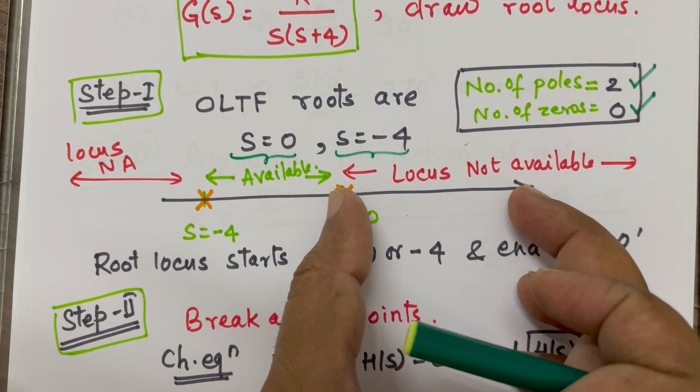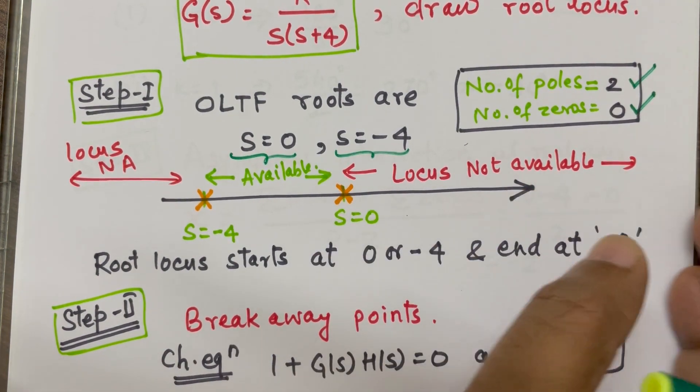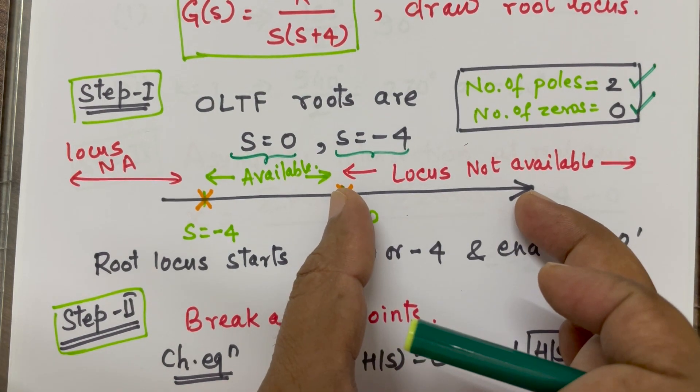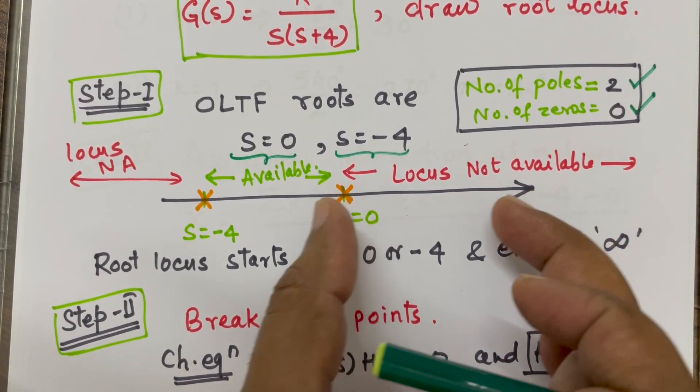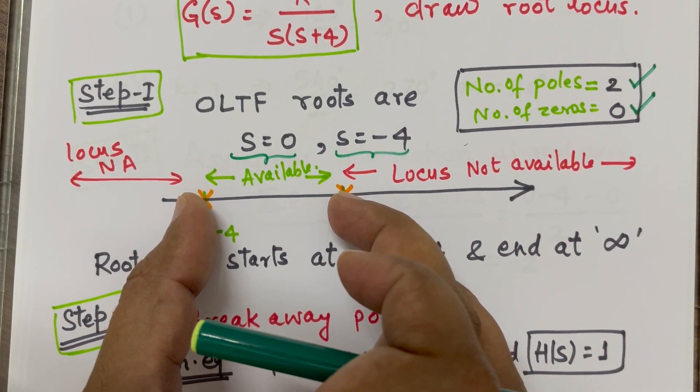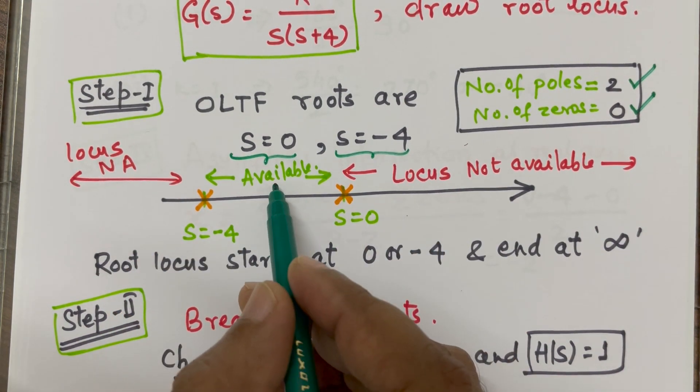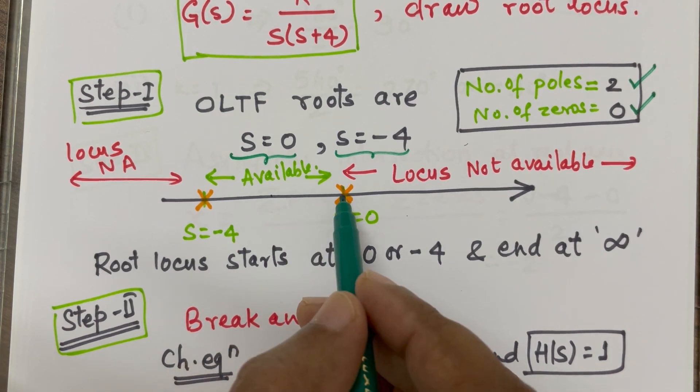When I am looking in this zone, I don't have any root in the right hand side. So, there will not be any locus, root locus in this region. When I come to this zone, if I take any random point over here, I have one pole in the right hand side.